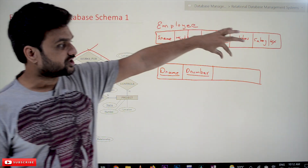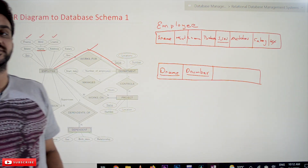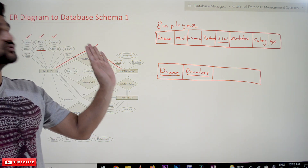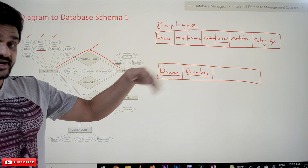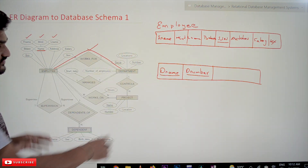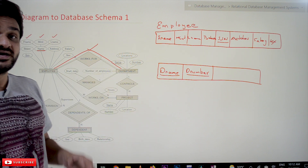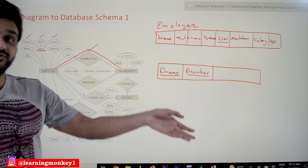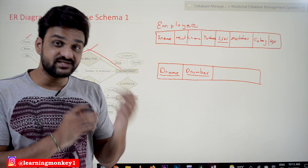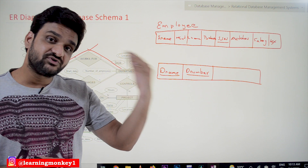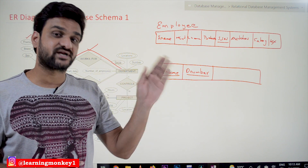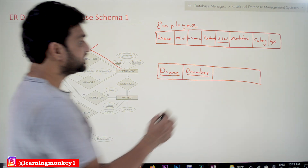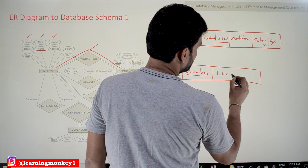The next attribute is Locations, but being a multi-valued attribute it is not allowed as a column in the relation as-is. For now, at this point in time, we will just take Locations as an attribute. Later, in our upcoming videos where we convert the entire ER diagram, we will see how Locations gets handled and why it needs to be treated differently.